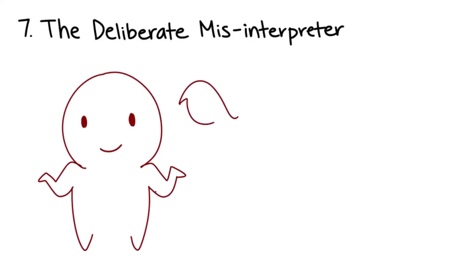7. The Deliberate Misinterpreter. This person seems nice, but they twist and use your words. This person spreads misinformation and misinterprets you, deliberately presenting you in a false, negative way.